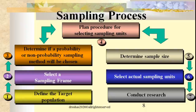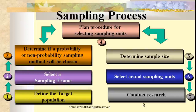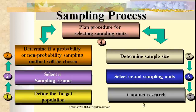After selecting the appropriate sampling method, we determine how many samples to study based on sample size calculation. Then we select the actual sampling units — those selected from the population. From the sampling units we pick the samples and conduct the actual research. These are the seven important steps in the sampling process.